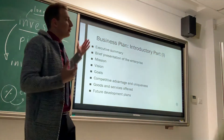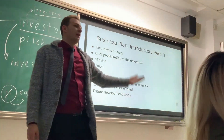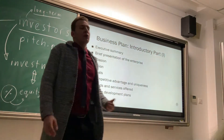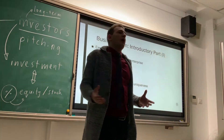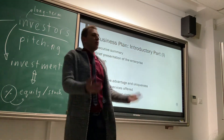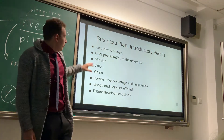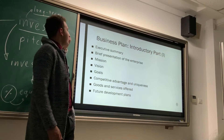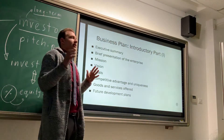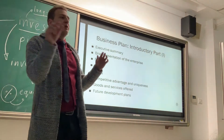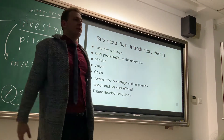The executive summary is not written the way you might write an academic abstract or essay. It's written from the perspective of encouraging readers to get on board with the project. You have to give a brief introduction to your enterprise, and articulate three elements clearly: your mission, your vision, and your goals — each well-articulated on separate lines, highlighted to draw the reader's attention.